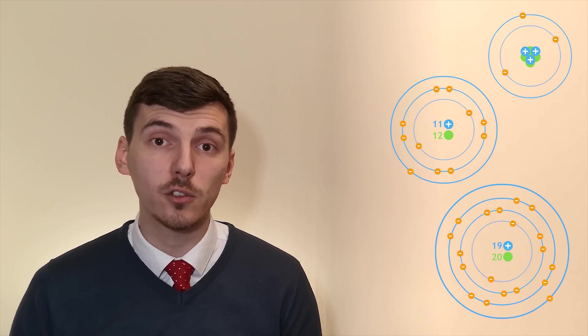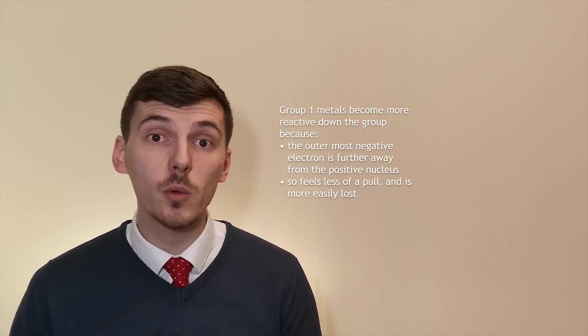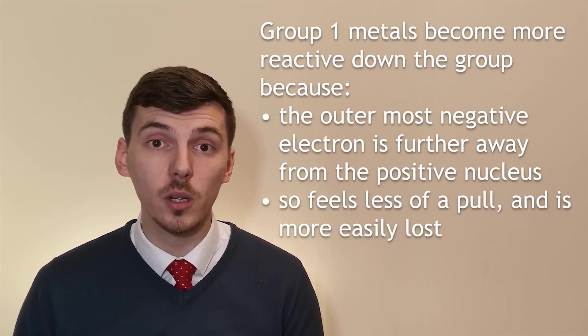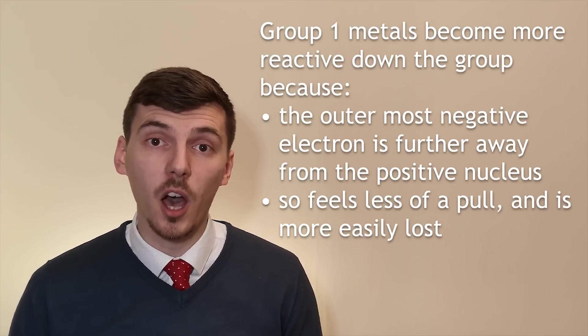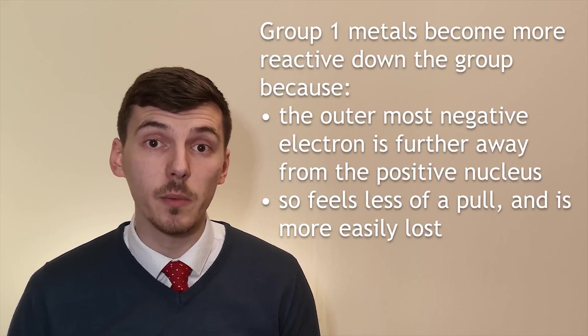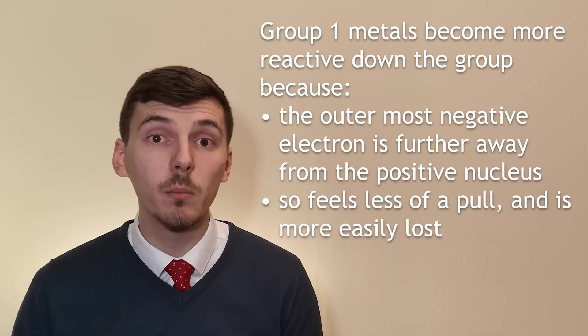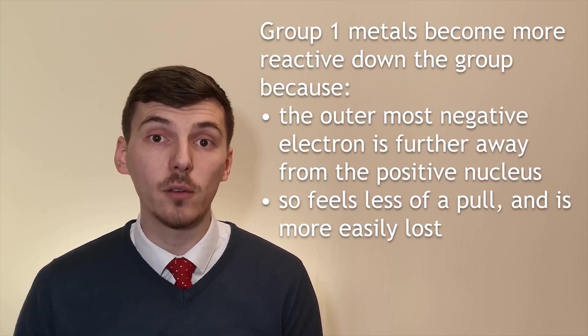So why is it then that the elements in group 1 are very quick to react and why is it the further down the group the more reactive they are? Well it's all to do with their electronic structure. You should hopefully remember that because they are group 1 metals they have one electron in their outer shell. The further down the group you go the more shells of electrons there are and so that electron in the outermost shell is further away from that positive charge in the nucleus. Potassium's outermost electron can't feel as positive a pull as lithium's outermost electron because potassium's is further away and so for potassium it can more easily lose its outermost electron and react.